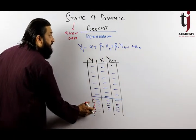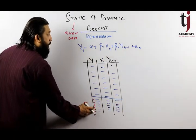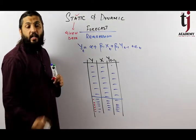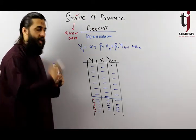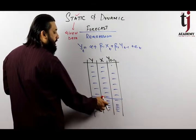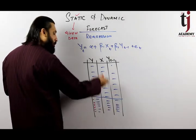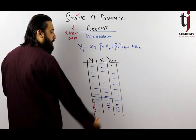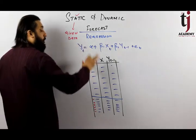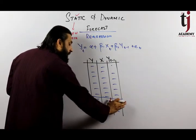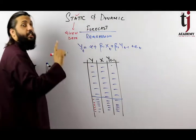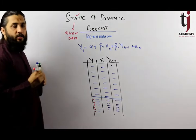Static forecast is done with the help of given data. The lag present here was already available, and the x present here was also already available. Using both of these, you forecast some value of y from given data — that is called static forecast.